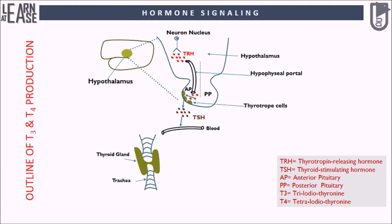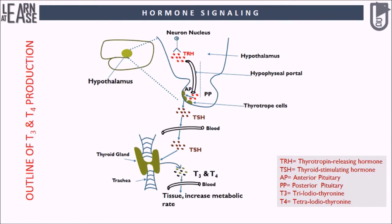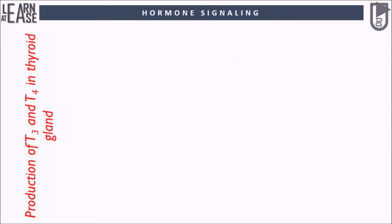The TSH circulating in blood reaches the thyroid gland and activates this endocrine gland, which produces triiodothyronine and thyroxine, abbreviated as T3 and T4 respectively. To know the exact mechanism for the production of T3 and T4, it is necessary to understand the structure and function of the thyroid gland.